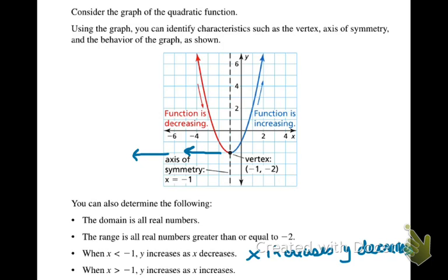So when x is greater than the negative 1, we're on the right-hand side. When x increases, okay, y, shown by the blue side of the parabola, is increasing as well. And that's how we can describe that.